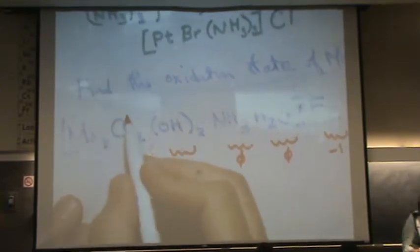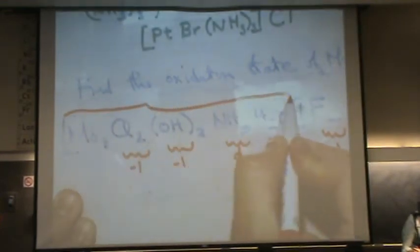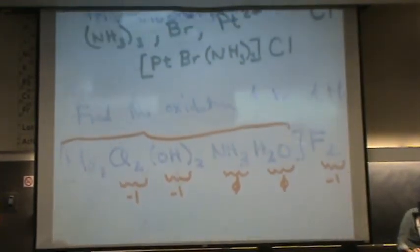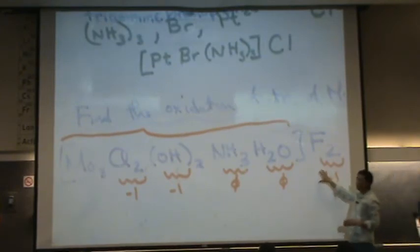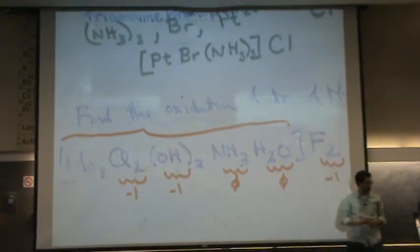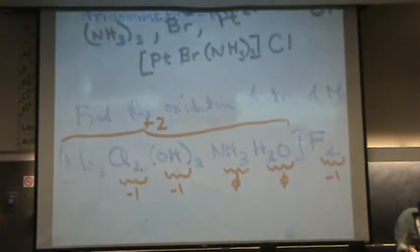So if F is minus one, I want to know the charge in the brackets. If that's minus one and there's two of them — minus two — so the brackets must be plus two. The brackets must be plus two, because there's minus two outside.